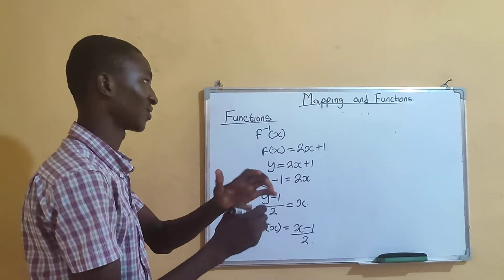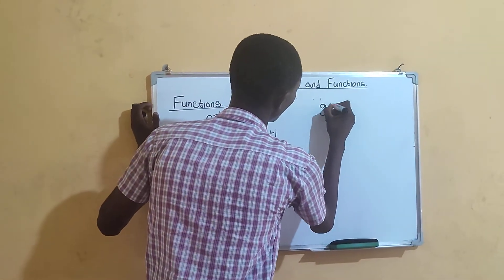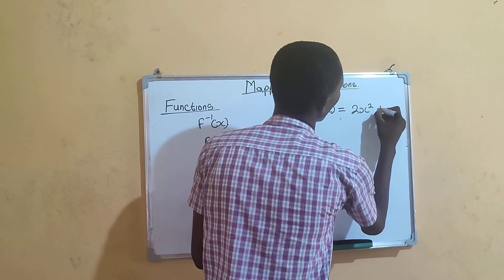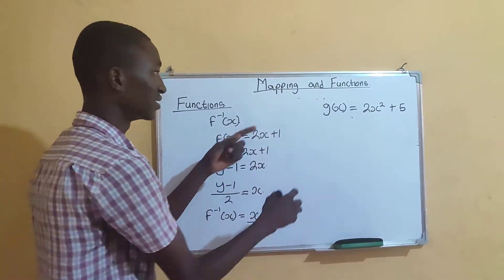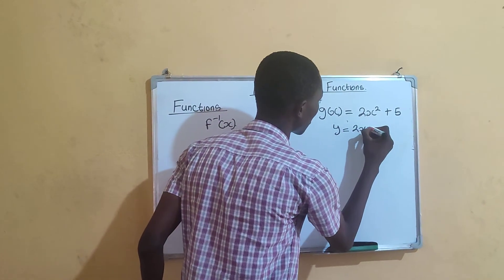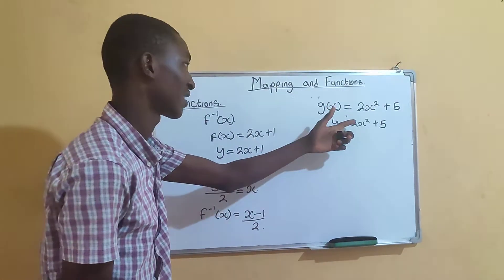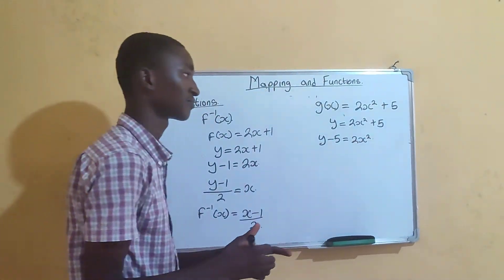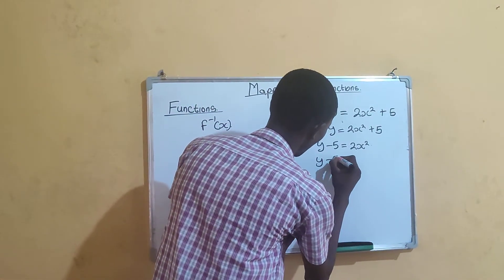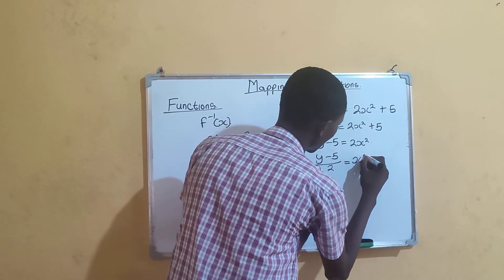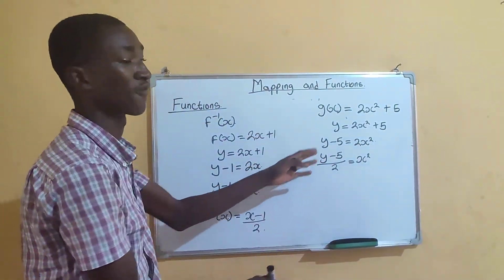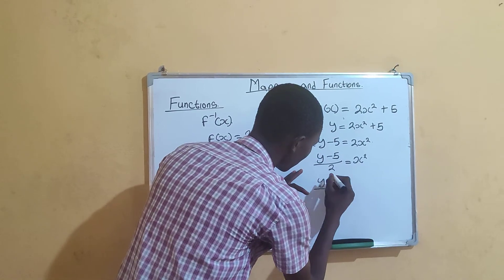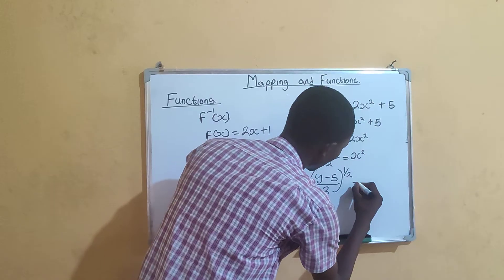For another example, let's find the inverse of g(x) = 2x² + 5. First, equate to y: y = 2x² + 5. Then make x the subject: y − 5 = 2x², so (y − 5) / 2 = x². To remove the square, find the square root of both sides: x = √((y − 5) / 2), which is the same as ((y − 5) / 2) raised to the power of 1/2.